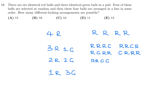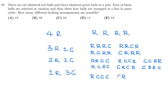For 2 red 2 green: RRGG, RGGR, GGRR, RGRG, GRGR, GRRG — that's 6. For 1 red and 3 green: the single red ball can go in 4 positions, giving 4 arrangements. Counting all arrangements: 1 plus 4 plus 6 plus 4 equals 15 total different-looking arrangements. Number 19, the answer is 15.